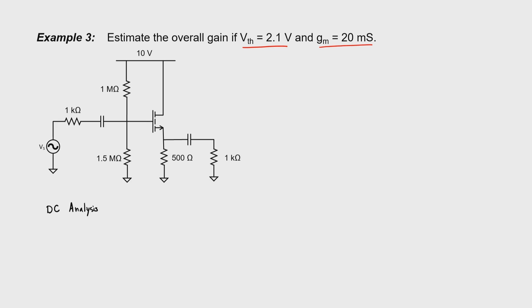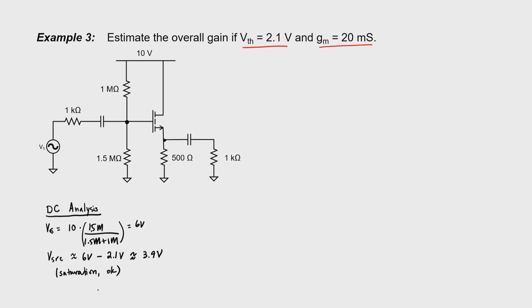We'll start with a DC analysis to make sure that the transistor is in saturation. Our gate voltage is going to be 10 volts times our voltage divider, or 6 volts. Our source voltage down here is going to be about a threshold below our gate voltage, or 3.9 volts. Our drain voltage is at 10 volts, so we have a high voltage at the drain, a medium voltage at the gate, and a low voltage at the source — this transistor should be in saturation. Let's go ahead and find the drain current: our source voltage divided by our 500 ohm resistor gives 7.8 milliamps. So my estimation of the transconductance, which I thought about at around 10 milliamps, should be very similar at 7.8 milliamps — but it's just a guess, as you saw from the datasheet.